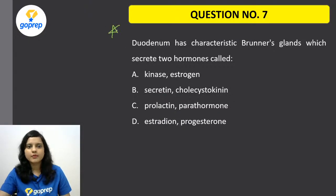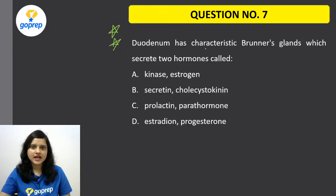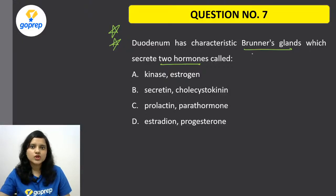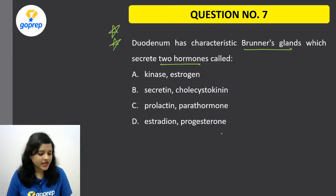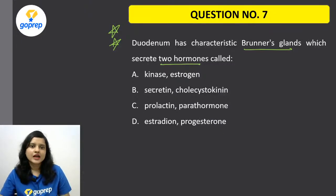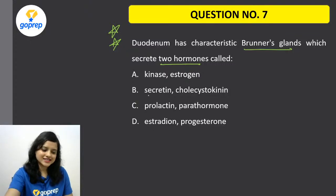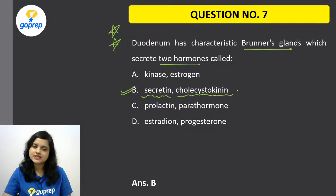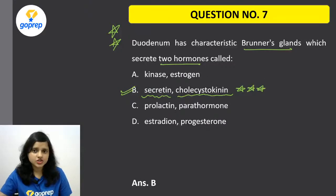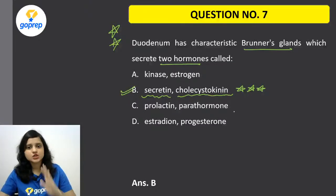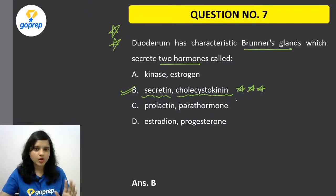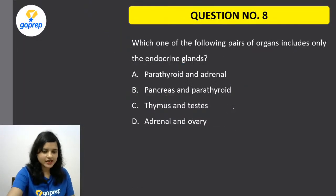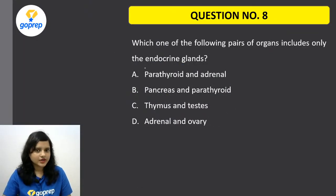Duodenum — a very good and important question. Duodenum has characteristic Brunner's glands which secrete two hormones. Which two hormones do Brunner's glands in the duodenum release? The correct option is B — it secretes secretin and cholecystokinin. If you knew this, very good; if not, mark this and make notes. This is a very important point.